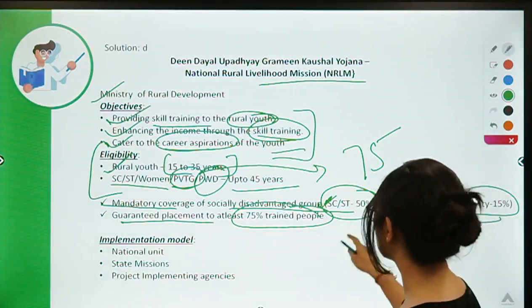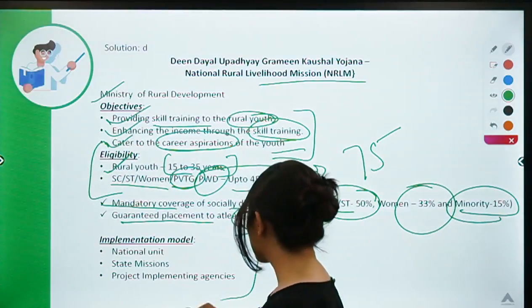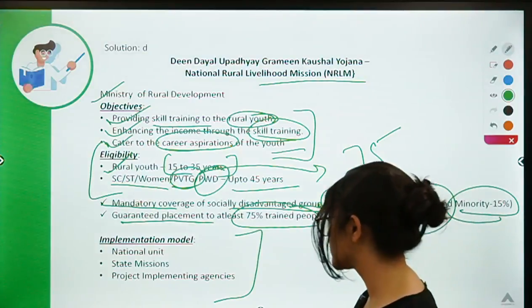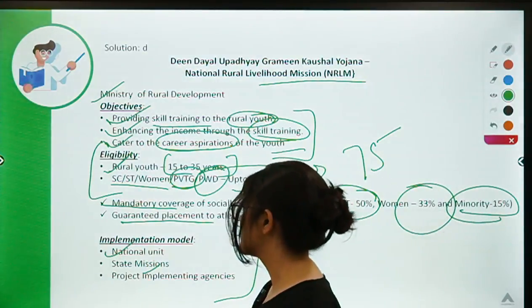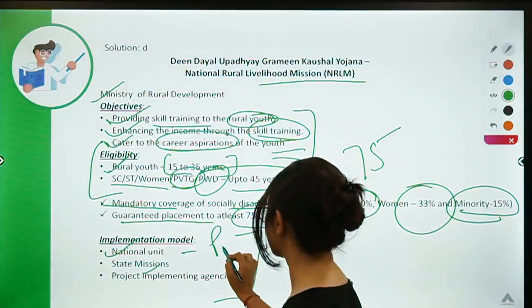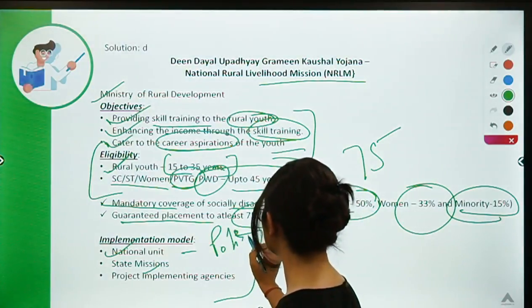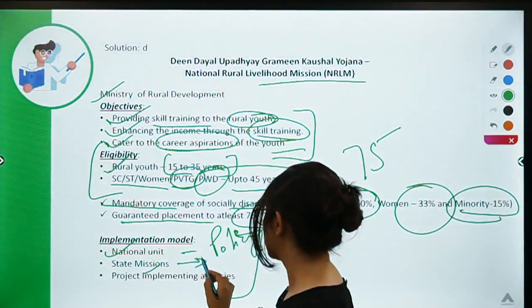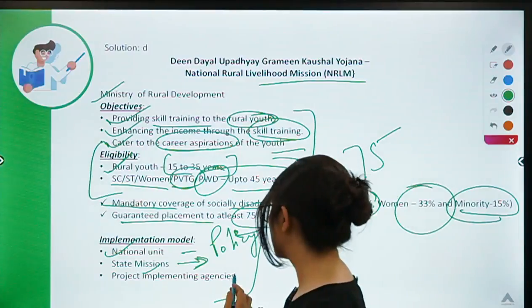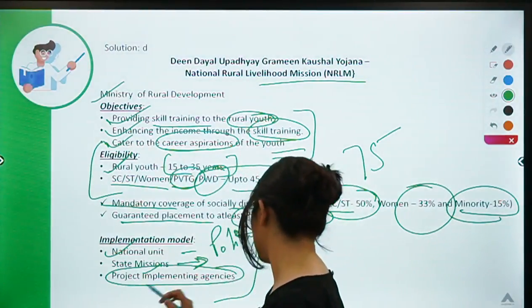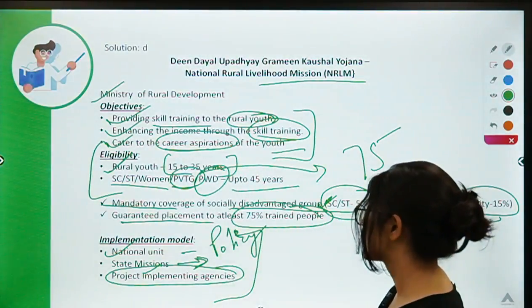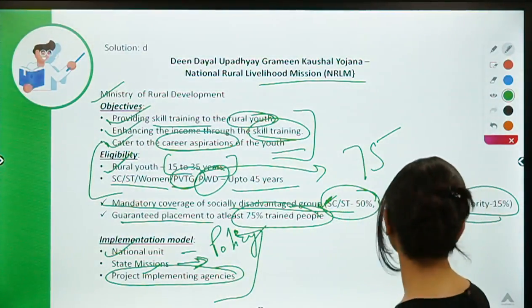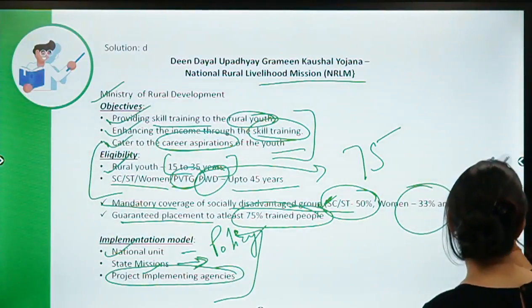The implementation model is a three-tier system. The first tier is the national unit, which handles policy support and policy making. The second tier is state missions, which help with implementation. At the bottom level are the Project Implementing Agencies — the agencies that actually implement the scheme on the ground.